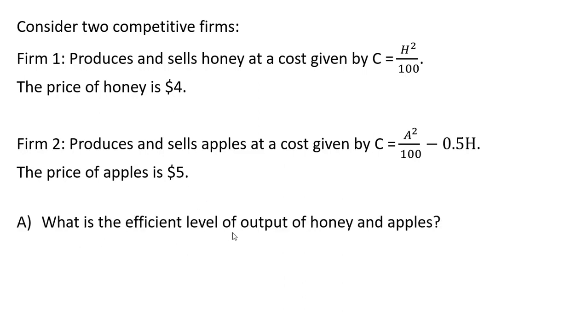What we want to do is find the efficient level of output of honey and apples. The efficient level will take into account this positive externality associated with honey production. The way we can find this is assuming that both of these firms will merge and then maximize joint profit.